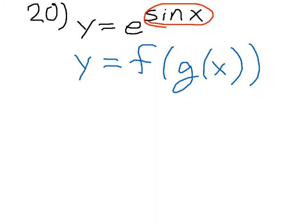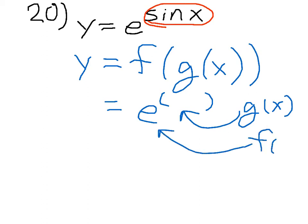Where at first what we see here is e to the something. And this here is going to be my g of x. My inner layer is what's in the exponent, which would mean e to the something would be my f of x.